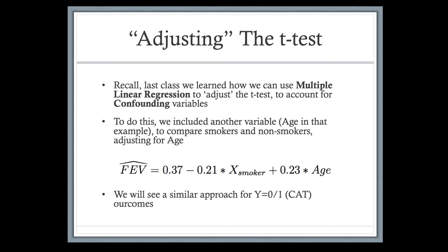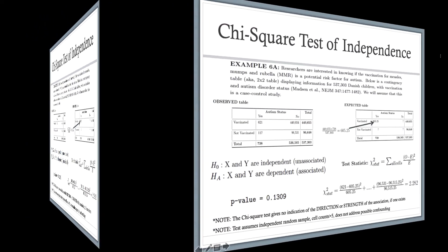Today we'll see a very similar approach when our outcome is categorical — yes or no. We'll first remind ourselves of the chi-squared test, odds ratios, and rate ratios through two-by-two table analysis. Then we'll acknowledge confounding variables and look at how logistic regression can estimate an odds ratio adjusted for other confounders. To get there, we also need to recap multiple linear regression covered last week.